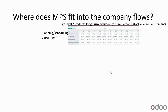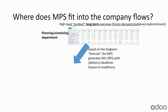The owner of the Master Production Schedule is the scheduling or planning department. They manage this high-level, long-term product overview based on inputs from all departments and suppliers gathered during scheduling meetings. They input all of this into the MPS, which then generates manufacturing orders and RFQs with delivery deadlines based on the lead times discussed.